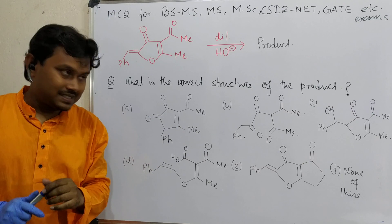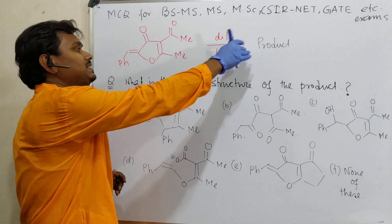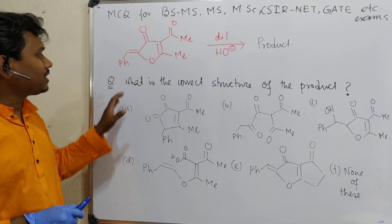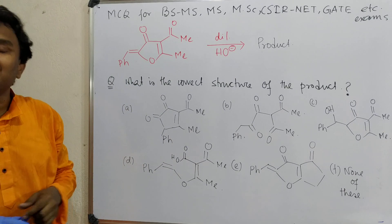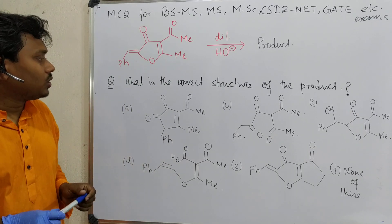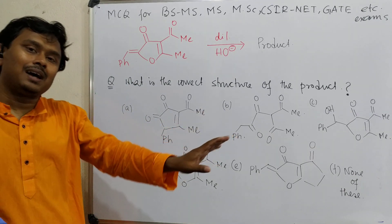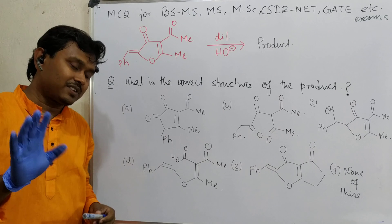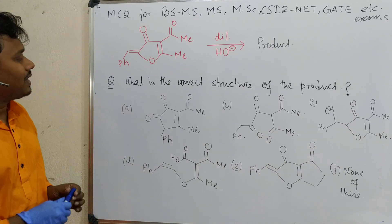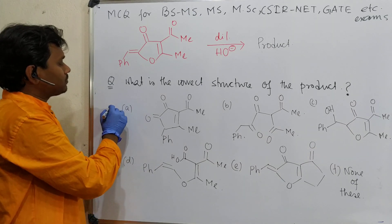So let's discuss. After the reaction, a product is produced and the question is what is the correct structure of the product. Let me give you the answer first, and after that I will explain. The correct structure of the product is A.